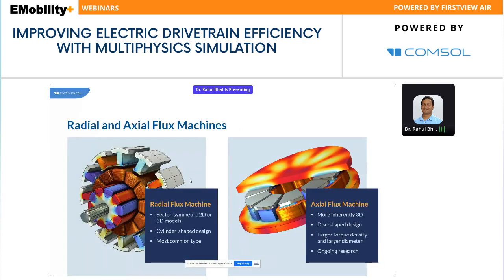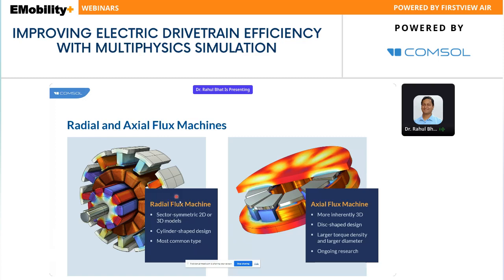Conventionally, permanent magnet motors are well-established; induction motors have also been used — for example, Tesla has one model with an induction traction motor. These conventional machines can be classified as radial flux machines. COMSOL offers built-in features to easily model and analyze radial flux machines, and also axial flux machines, which is an upcoming technology with higher power density. COMSOL is suitable for modeling both conventional machines and new designs.